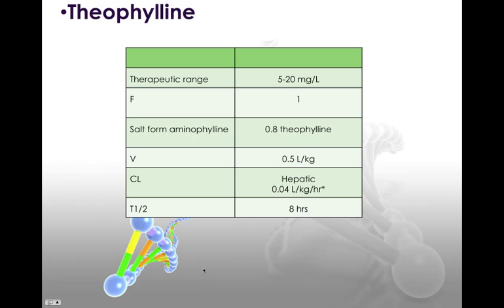Hopefully this will be our last recording on PK and PD of asthma. We're going to talk about theophylline — this is really going to be all about pharmacokinetics of theophylline. It's not used that often anymore to treat asthma, but it's a great example of a one-compartment model linear pharmacokinetic dosing. You'll also see questions on board exams on this drug, even though it's not used that much anymore.